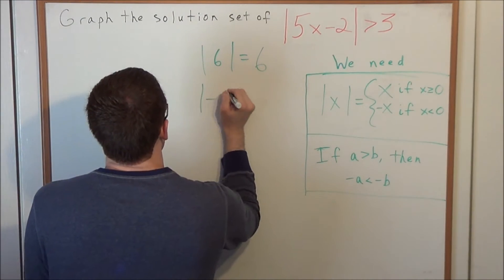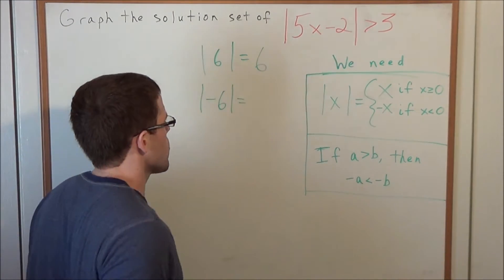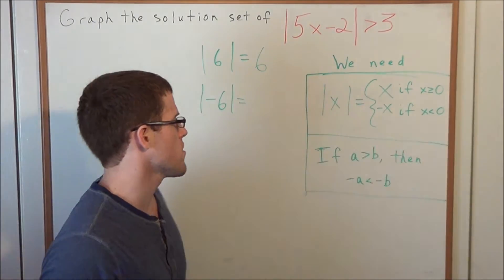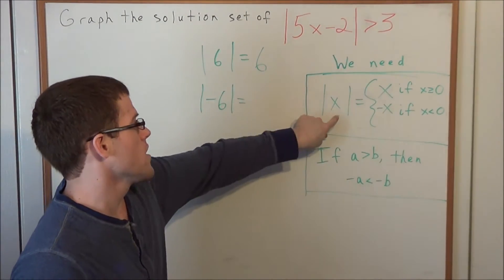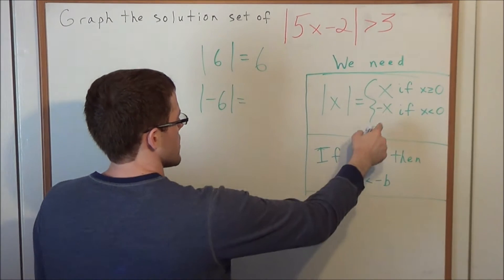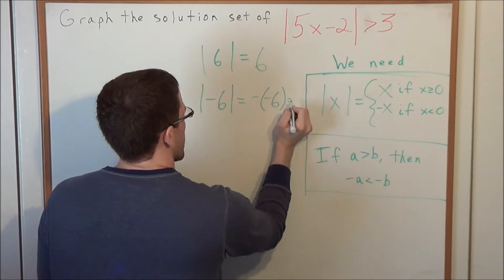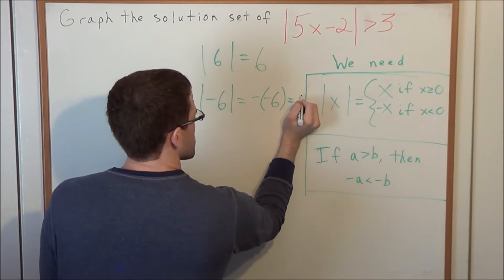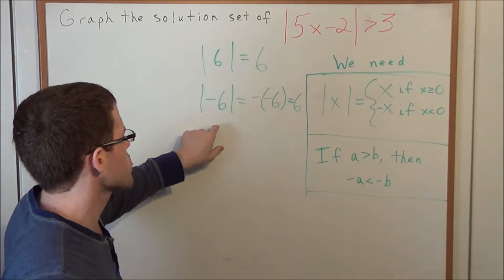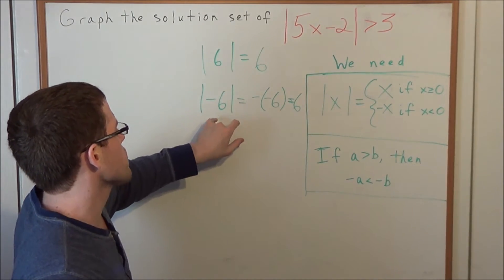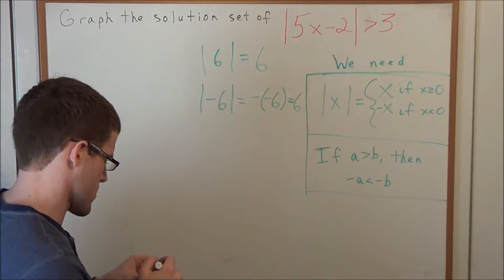But in this example, absolute value of negative 6, what does this give us? We have an x value that is less than 0, so the absolute value of x when x is negative 6 is equal to negative negative 6, which when we have a negative of a negative becomes a positive. So this is why absolute value of negative 6 by definition equals positive 6.